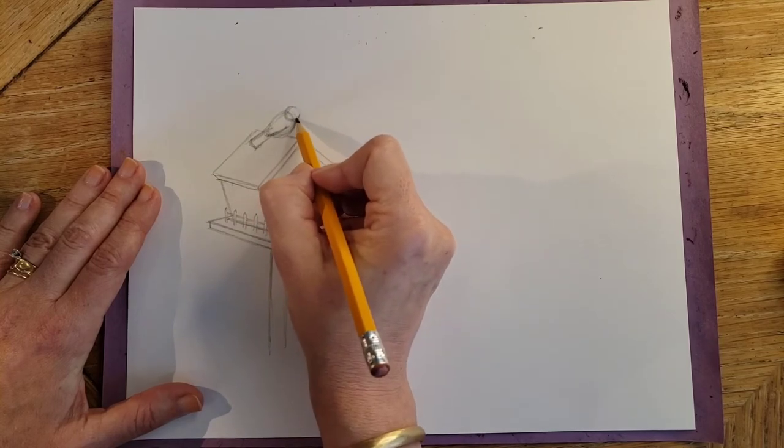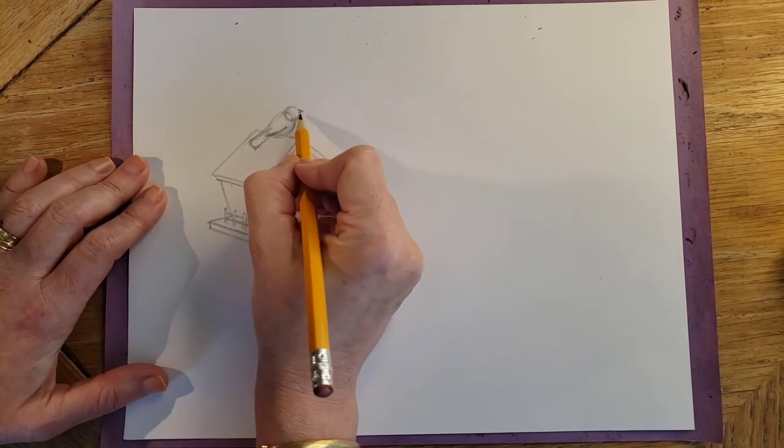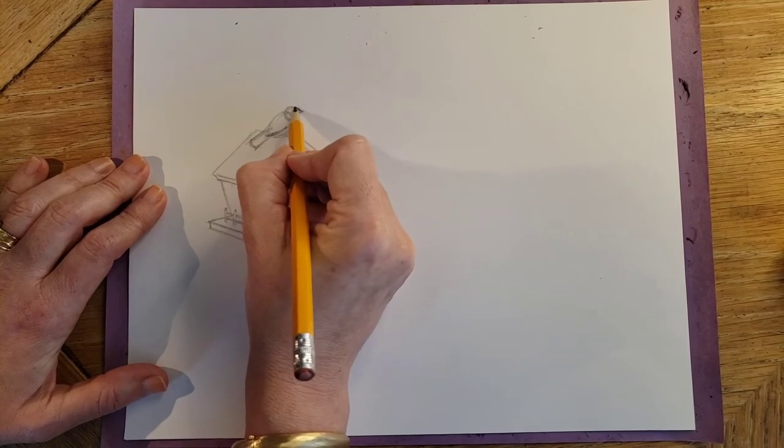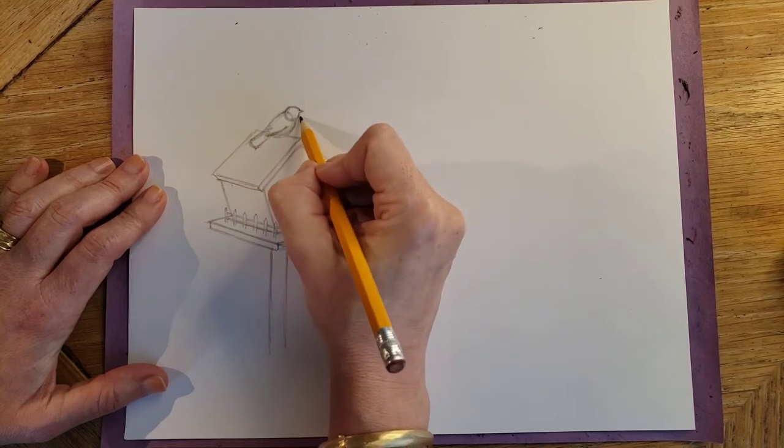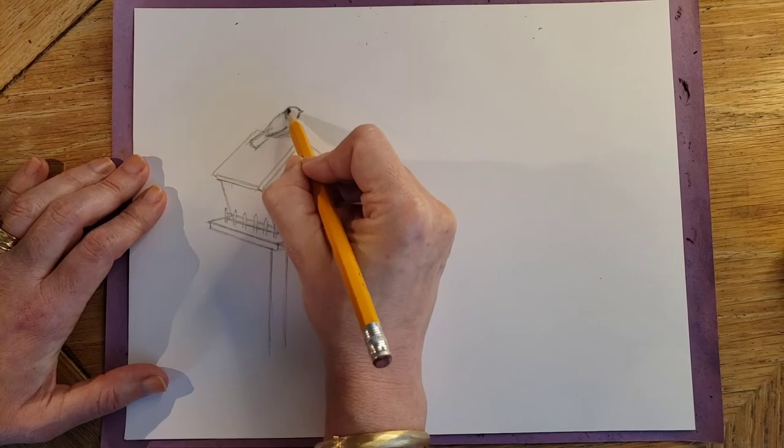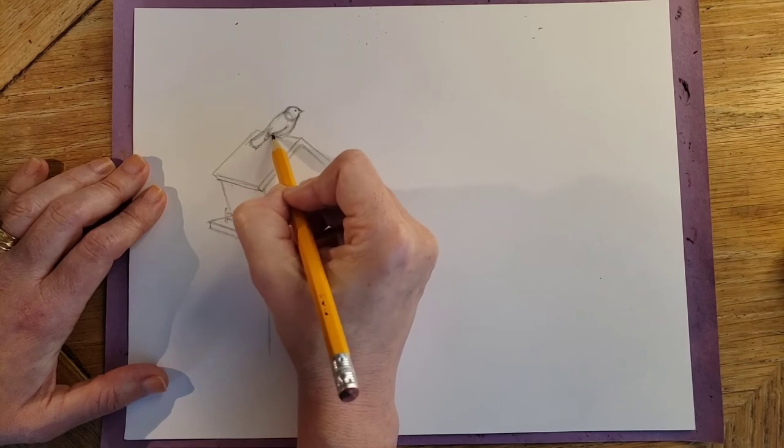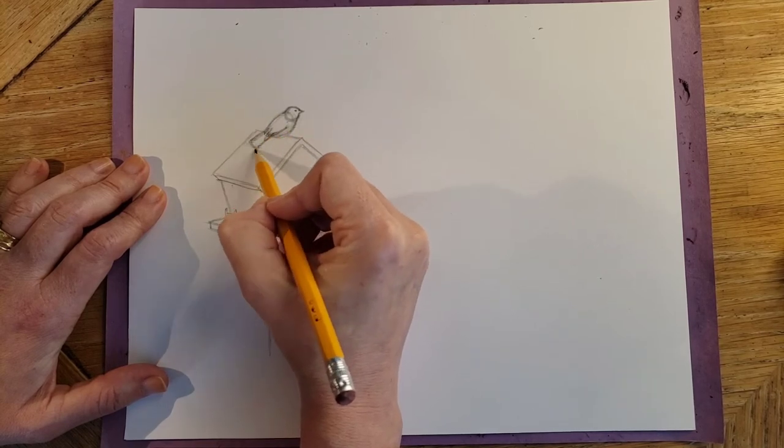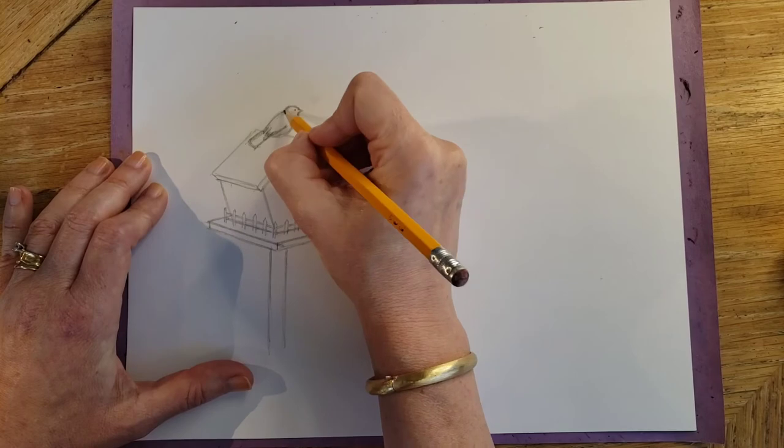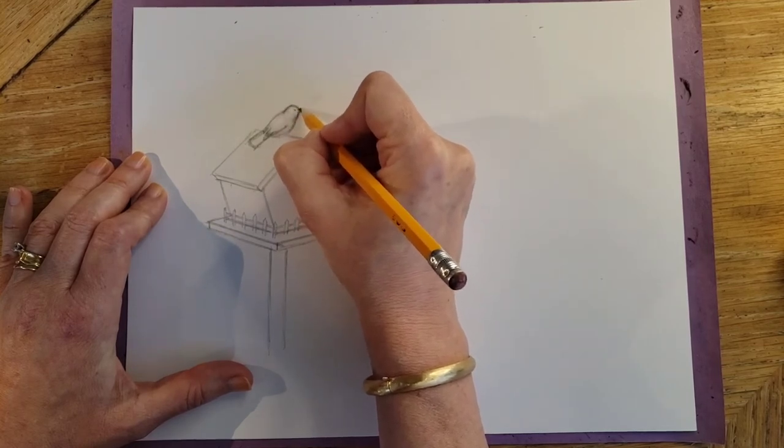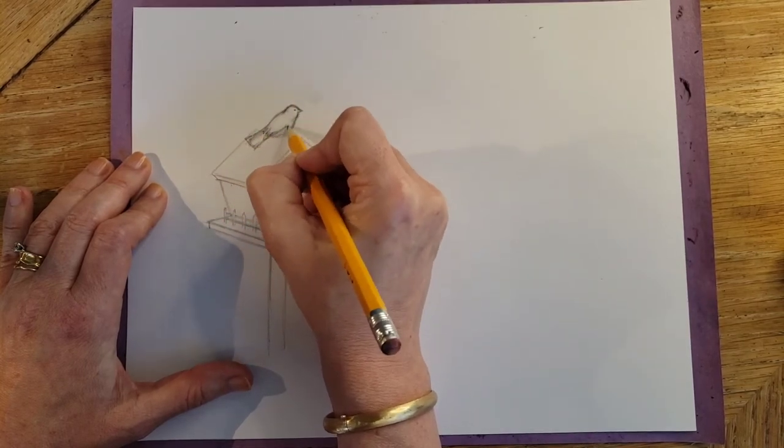A little line right here for the wing. And then the beak is going to be up here. Pretty high up, right? So that when you connect this right into there and this little eye.